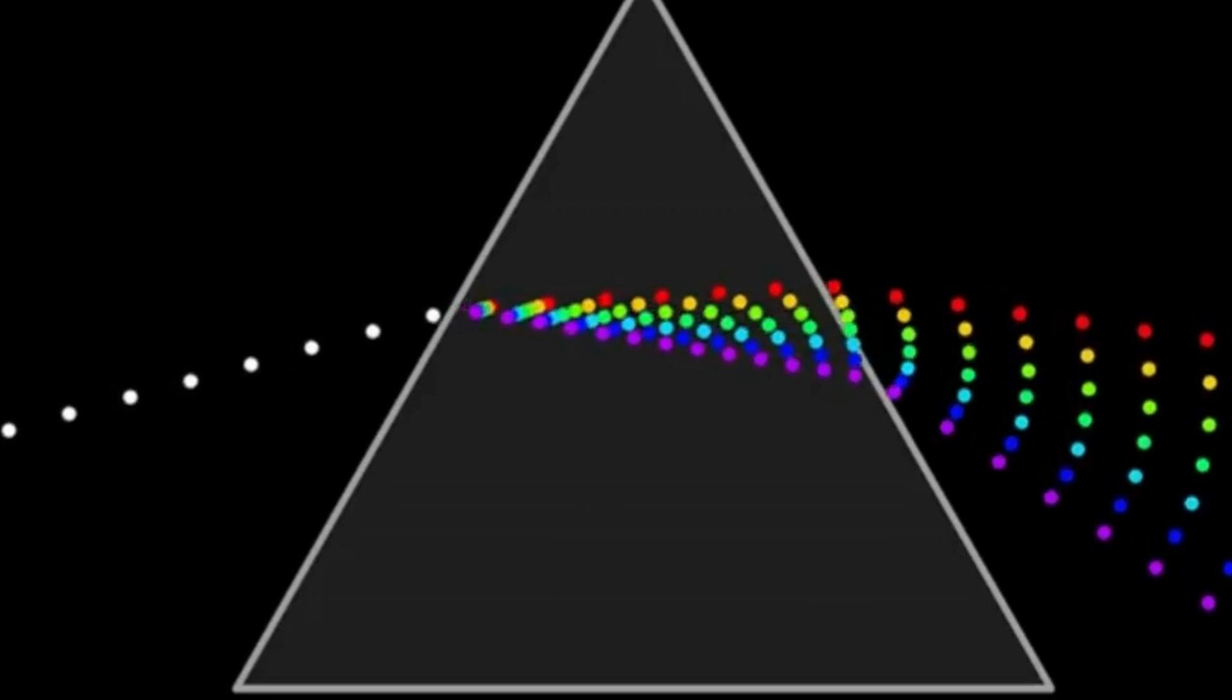He set up a source of light and shone it through two narrow slits onto a board. Young noticed that rather than getting two bands of light on the other side of the slits, a strange striped pattern was forming. This was known as an interference pattern and was incontrovertible proof that light had been traveling as a wave.